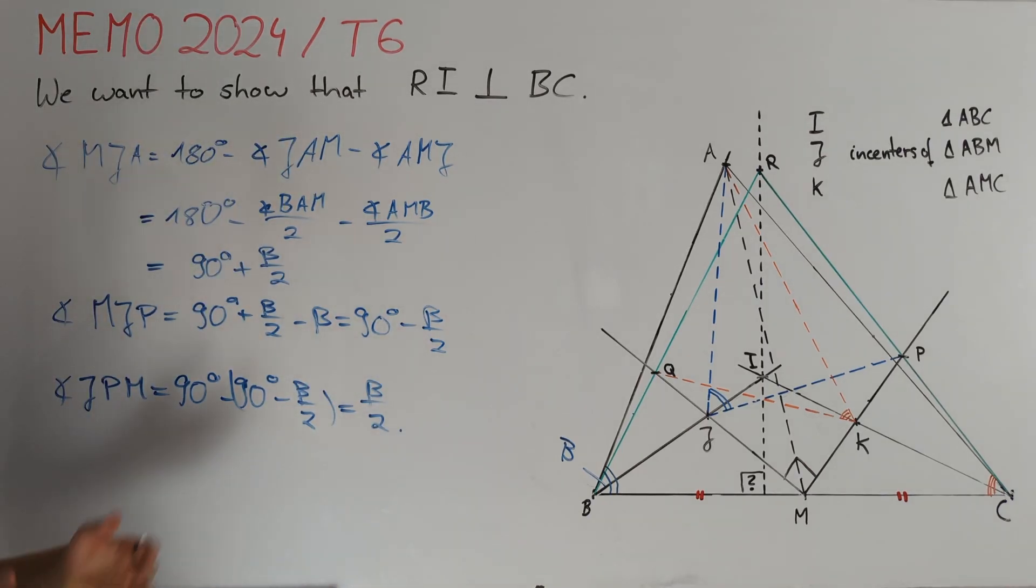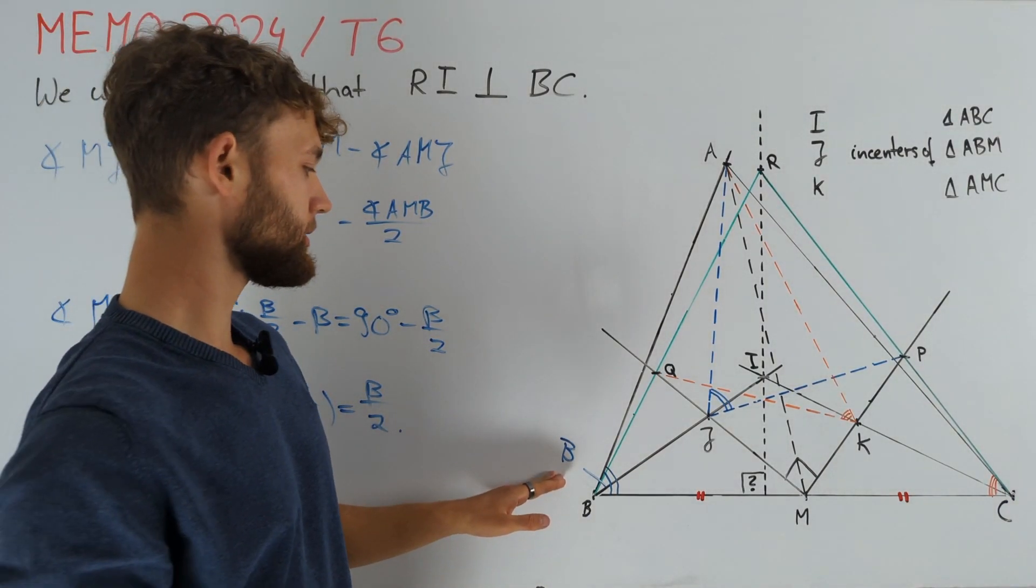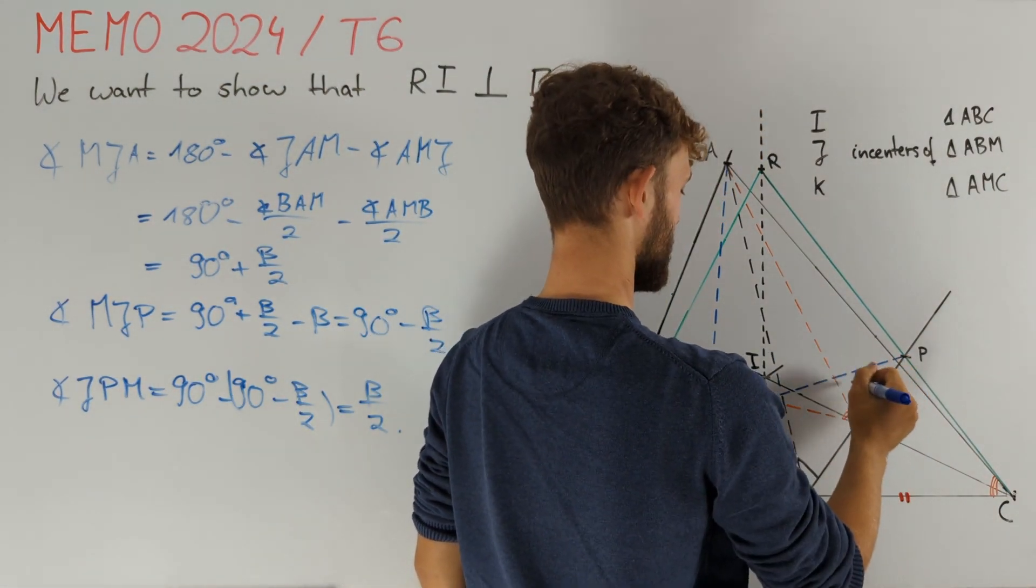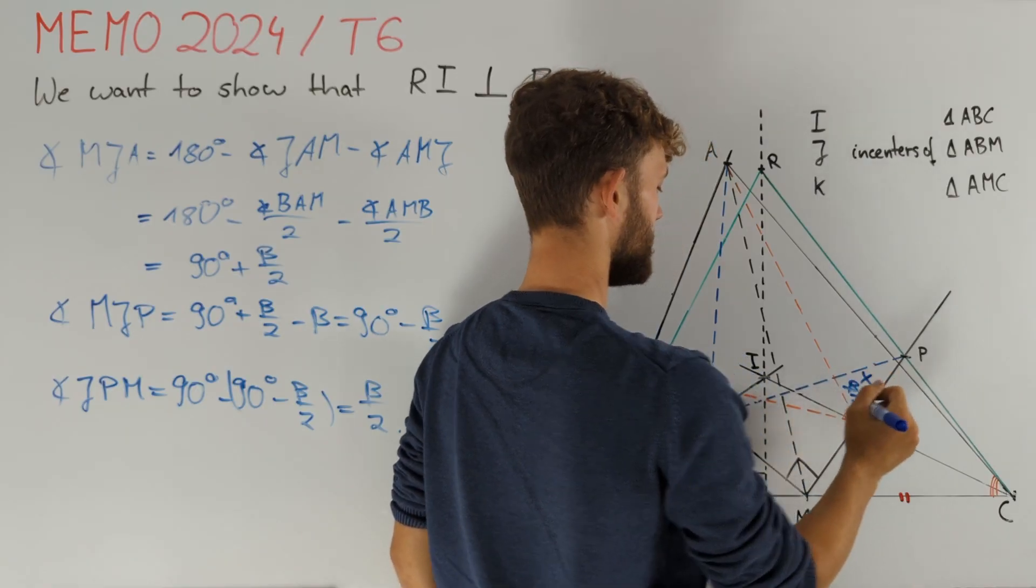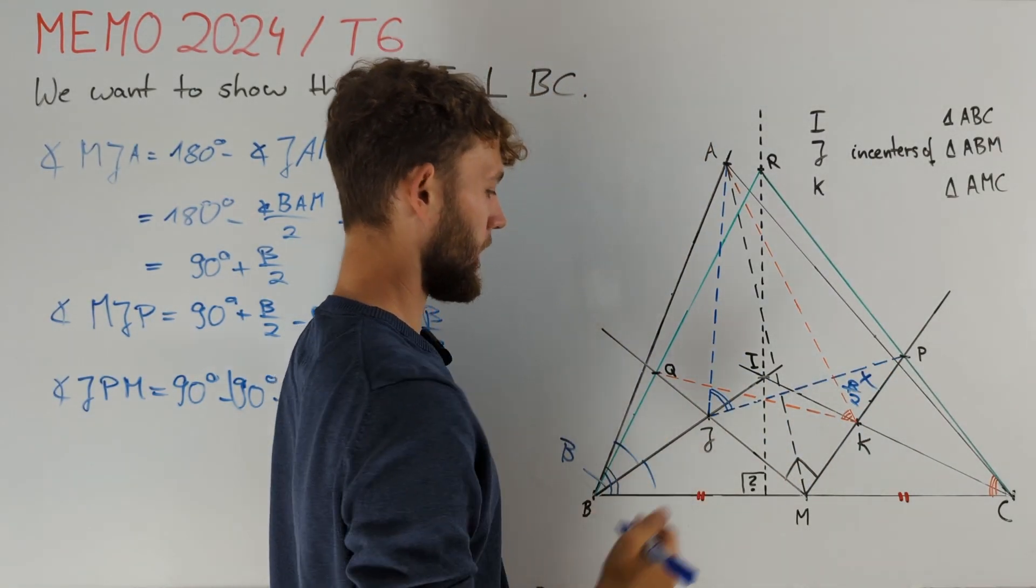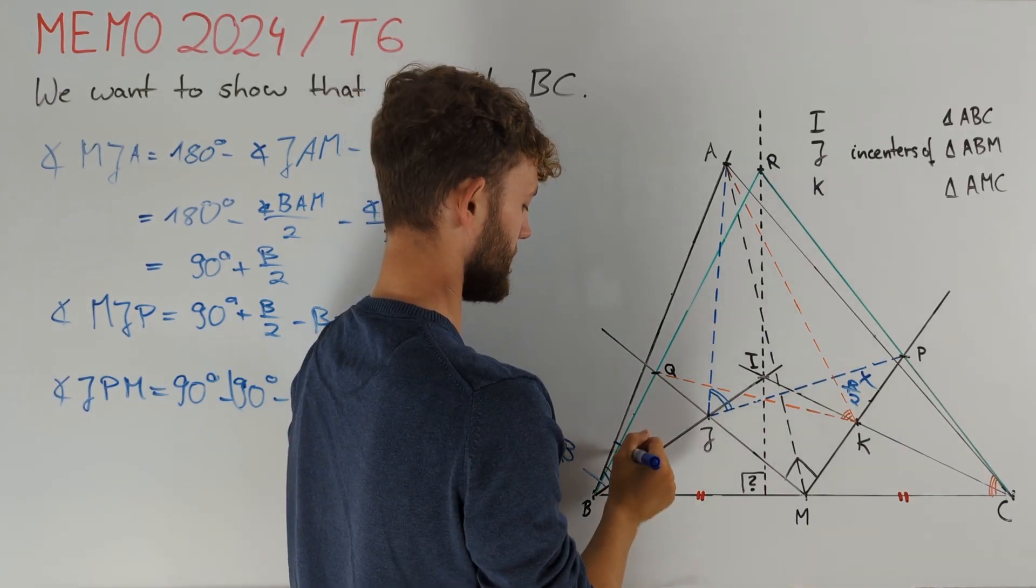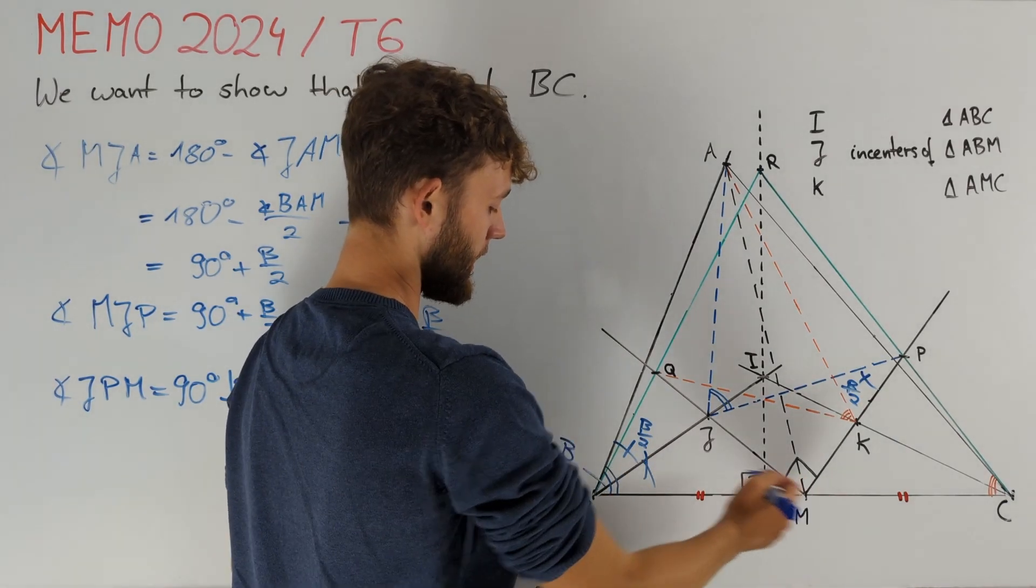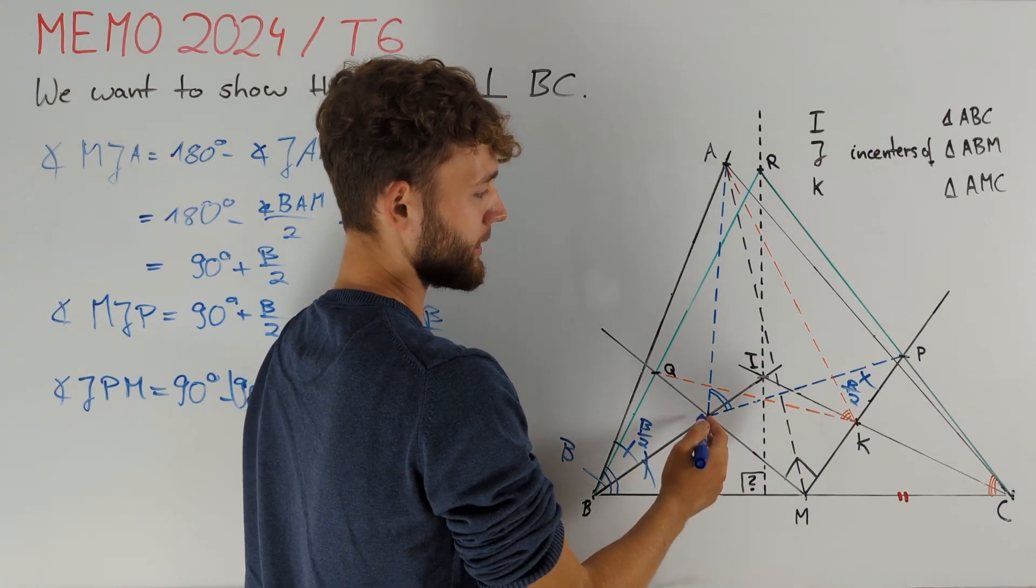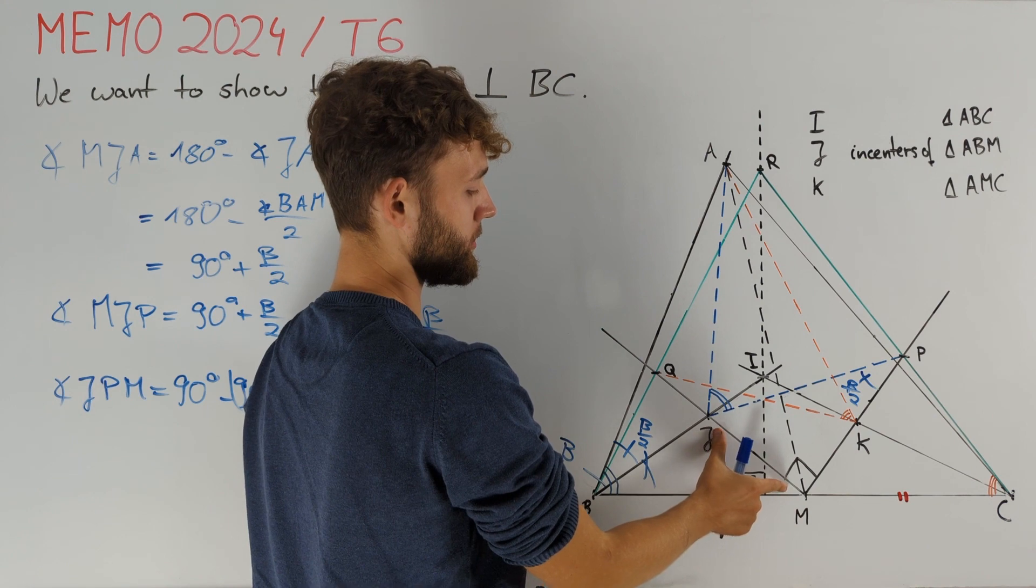We notice that since we are dealing with incenters, this angle beta over 2 which we have just discovered to be equal to angle JPM already appears in our picture. Namely, these two angles right here are equal to beta over 2 as well. In particular, this angle MBJ is an angle over the same line segment as angle JPM, namely segment MJ.